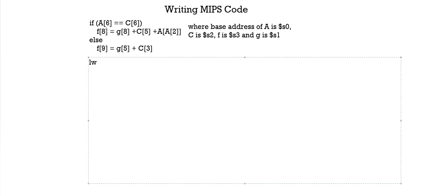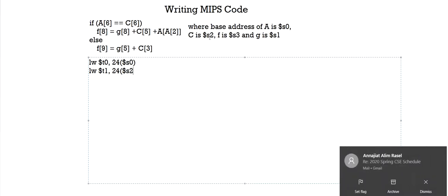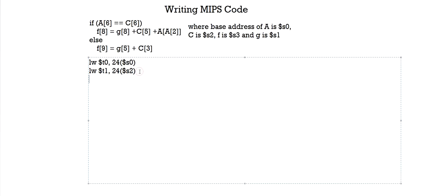Since the index 6 is already given as a number, we don't need to carry out any shift — we can directly load it into a register. I'll choose T0. The offset is 6 × 4 = 24, and our base register is A, which is S0. Next, we load C[6] into T1: offset is also 24, and C's base address is S2. We've now loaded both memory addresses into separate registers and can branch them.